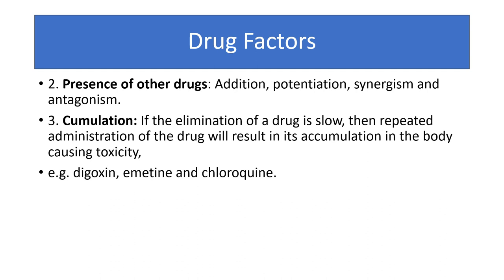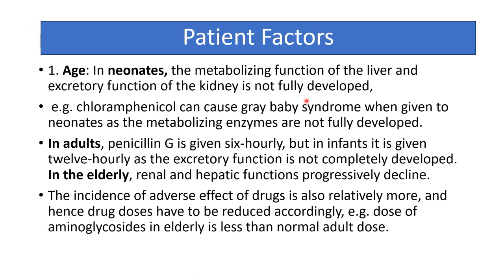Patient factor — age: in neonates, the metabolizing function of the liver and excretory function of the kidney are not fully developed. Chloramphenicol can cause gray baby syndrome in neonates. In infants, penicillin G given every 6 hours in adults should be given every 12 hours. In elderly patients, renal and hepatic function progressively decline, so adverse effects are more common and doses should be reduced — for example, aminoglycosides.